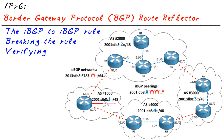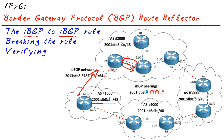To best understand the route reflector's function, let's look at the network block being advertised by R1 up to R2. When R2 learns the prefix 2001:db8:1::/48, it tells all its internal neighbors, so it advertises it over to R3. Here's where it becomes critical: there is a rule that says if I learn a route from an IBGP neighbor, I will assume everybody else in my autonomous system already knows about it and won't advertise it.